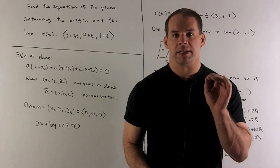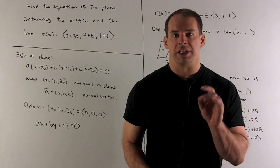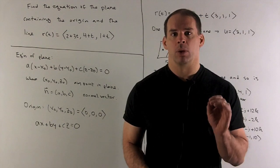Find the equation of the plane containing the origin and the line r(t) equals (2 plus 3t, 4 plus t, 1 plus t).